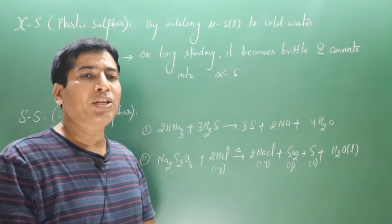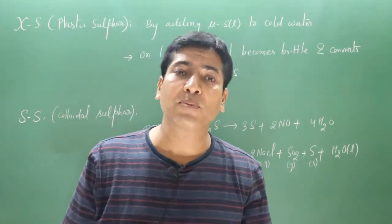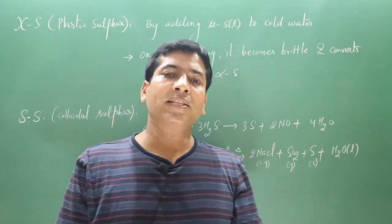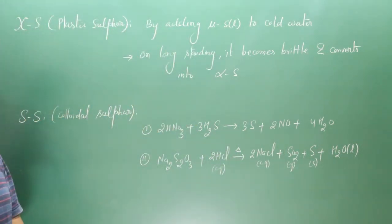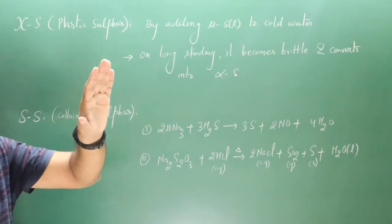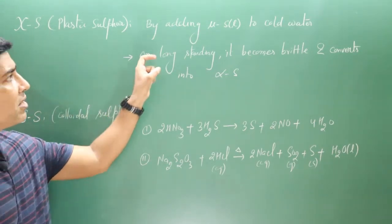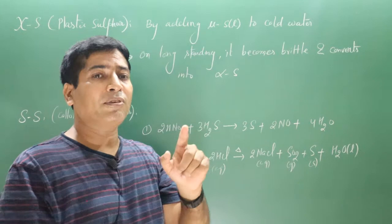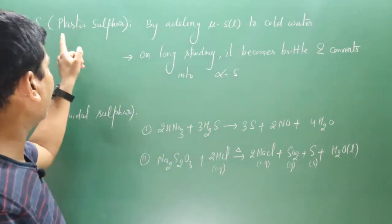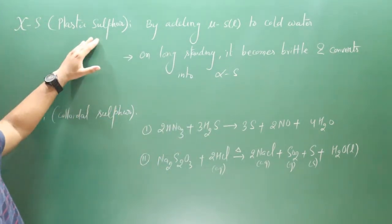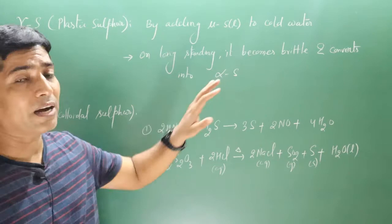Next we have chi sulfur, also known as plastic sulfur, because it shows rubber-like properties. In solid state, rubber is an example of an amorphous solid, so plastic sulfur is amorphous by nature and also has supercooled liquid properties. It can be prepared by heating mu sulfur — which is thick and viscous — and then adding it to cold water. Keep in mind that when this supercooled liquid is left on long standing, it becomes brittle and converts into rhombic (alpha) sulfur.